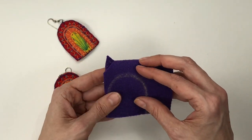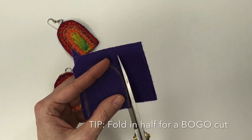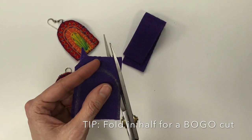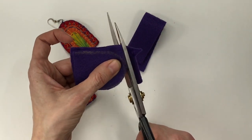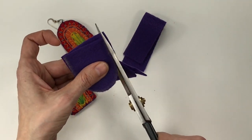Go ahead and draw your rainbow shape with chalk. Fold your fabric in half for what I call a bogo. When you cut it out you got two for the price of one, and if you just mess it up just rub off that chalk and give it another go.